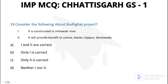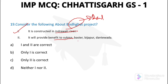Question number 19: Consider the following about Bodh Ghad Project. It is located in Dantewada and is built on Indravati River. It will provide benefit to Bastar, Vijayapur, and Dantewada — not Sukma. So option 2 is not correct, and one only is correct — option B.